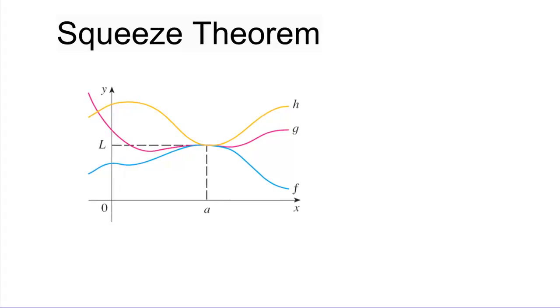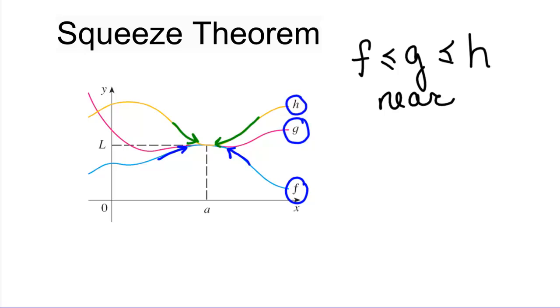So if we have this function g here that we care about, that we want to know its limit, but we happen to have a function h and a function f that we do know about, so that we know the limit as h as it gets close to a, and we know the limit of f as it gets close to a, and it happens that g is squeezed between f and h near the point a that we care about.